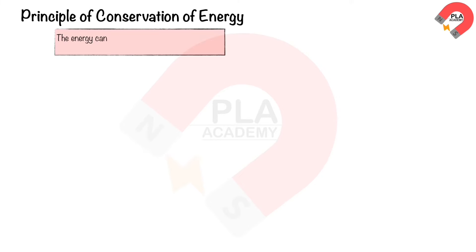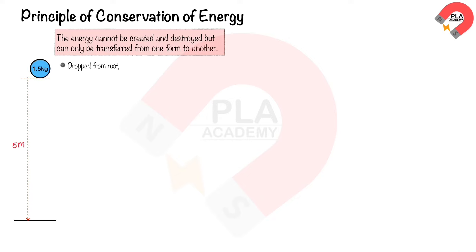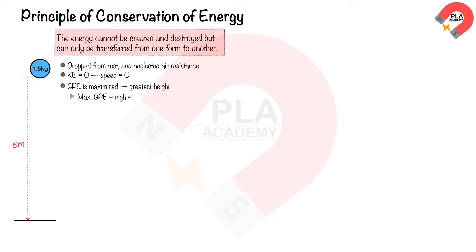The principle of conservation of energy states that energy cannot be created or destroyed, but can only be transferred from one form to another. For example, consider a mass of 1.5 kg dropped from rest from a height of 5 meters, neglecting air resistance. At the initial position, the mass has zero kinetic energy due to its zero speed, while gravitational potential energy is maximized. The maximum gravitational potential energy is mgh = 1.5 × 9.8 × 5 = 73.5 Joules, and this is the total mechanical energy of the system, which remains constant at any position.